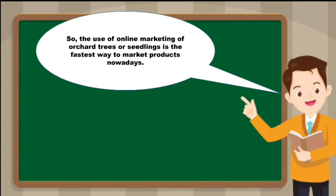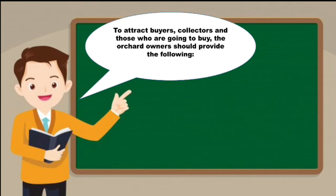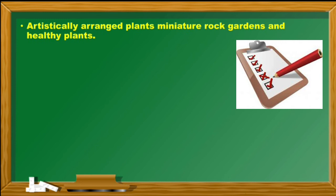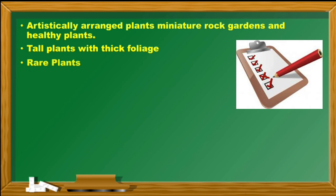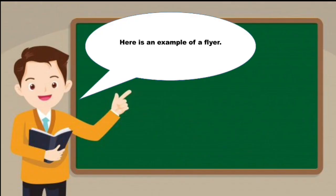So the use of online marketing of orchard trees or seedlings is the fastest way to market products nowadays. Another is the preparation, distribution, and posting of suppliers in conspicuous places to attract buyers, collectors, and those who are going to buy. The orchard owners should provide the following: artistically arranged plants, miniature rock gardens and healthy plants, tall plants with thick foliage, rare plants, shady or clean and unobstructed pathways, helpful information tips, reasonable prices, cheerful, honest, and accommodating caretakers or sales persons.